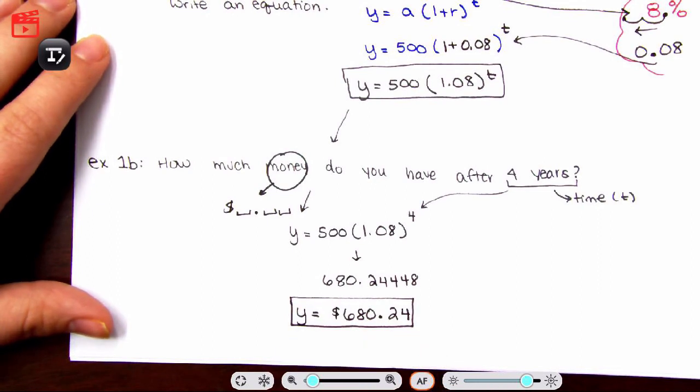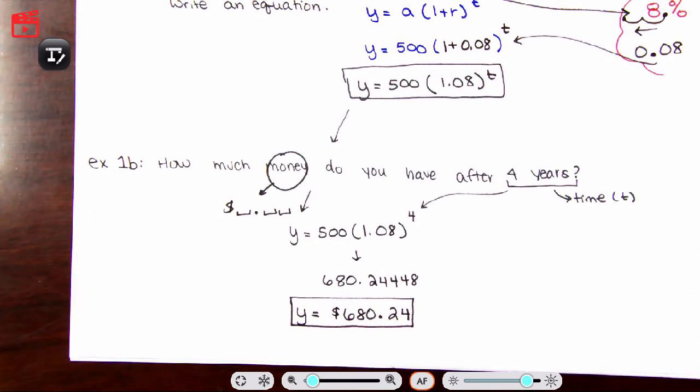So you started out with $500 with an interest rate of 8%. In four years, your $500 becomes $680. That's assuming you are not touching that money. Alright, that is it. Let's go ahead and do part two of this video.